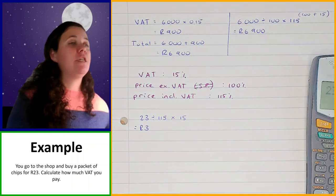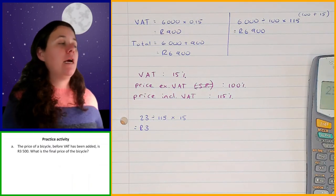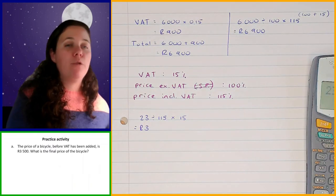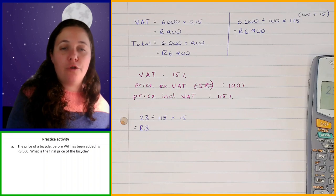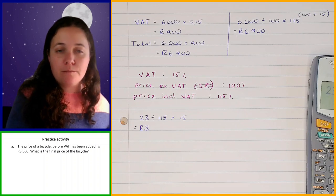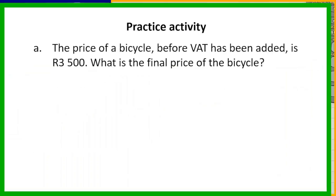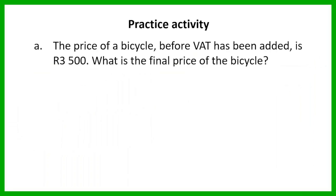Now here's an example for you to work on on your own. The price of a bicycle before VAT has been added is 3,500 rand. What is the final price of the bicycle? I'm going to give you one minute to work on this.